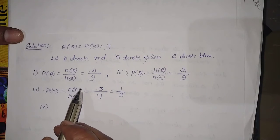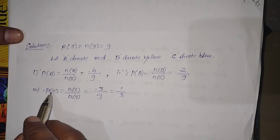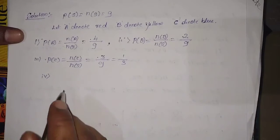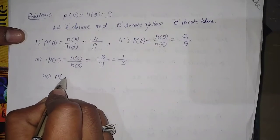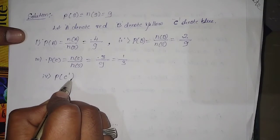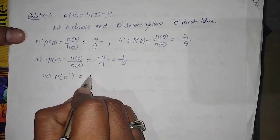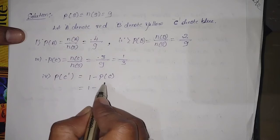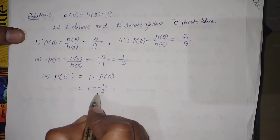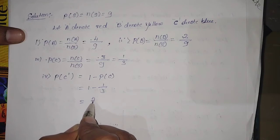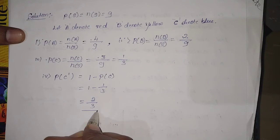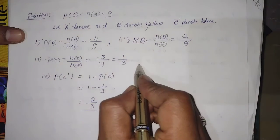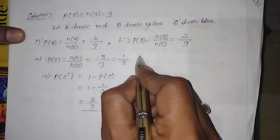The fourth question asks for not blue. P(C') = 1 − P(C) = 1 − 1/3 = 2/3. This is the probability of not a blue disc.